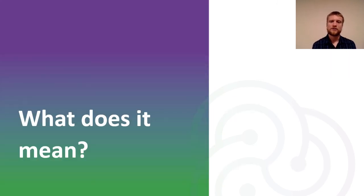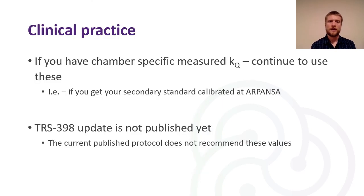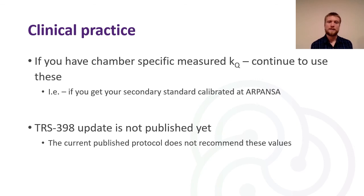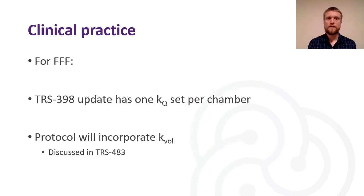If you have chamber-specific measured KQs — the ones we provide when you get your secondary standard calibrated at ARPANSA — we recommend that you continue to use these, as they are chamber-specific and match your chamber rather than a generic one, accounting for any small differences that might exist. The TRS-398 update is not published yet, so the current published protocol does not explicitly recommend these values, but they have been provided so that you may use them if you wish. For flattening filter-free beams, the updated TRS-398 protocol will have one set of KQ values per ionization chamber type, and the protocol will also include the volume averaging correction factor KVol, as described in TRS-483.